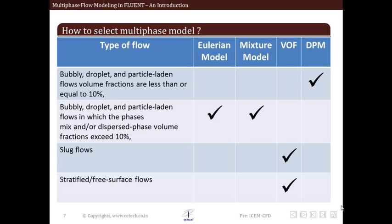The next flow type is slug flow, for which the VOF model is applicable because we have distinct or separate phases with an interface between them. Another type is stratified free-surface flow. Again, as we have a free surface and a distinct interface between two phases, we use the volume of fluid model.